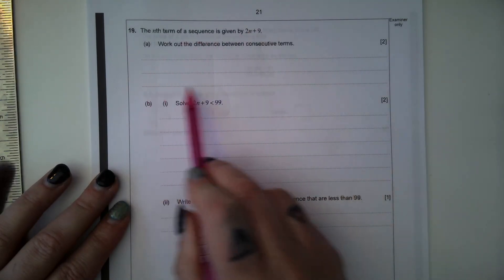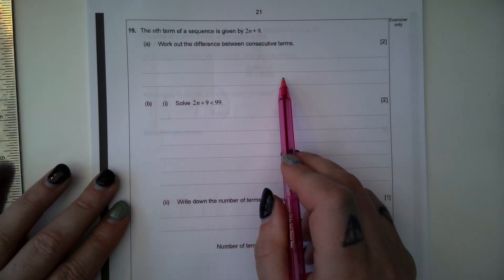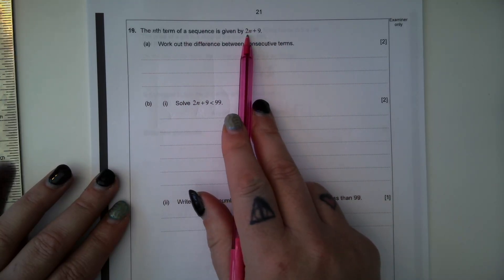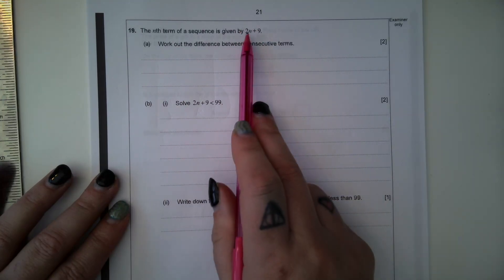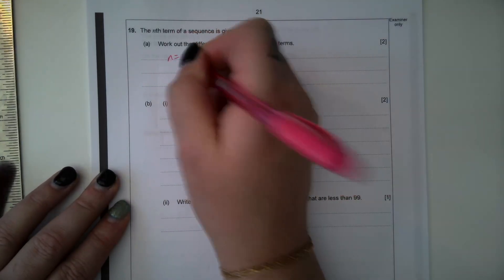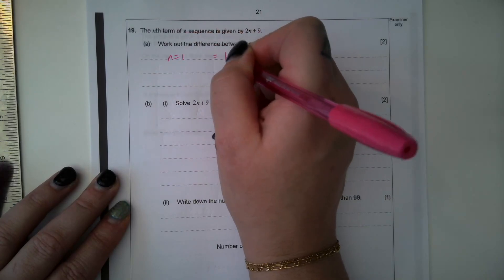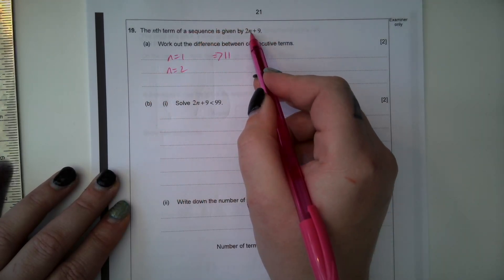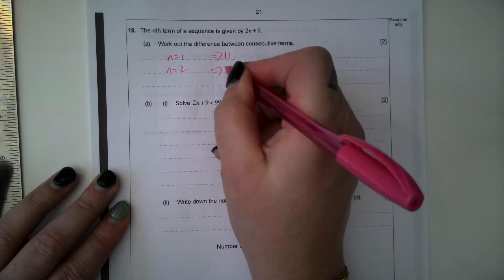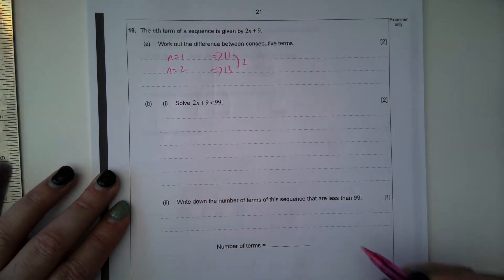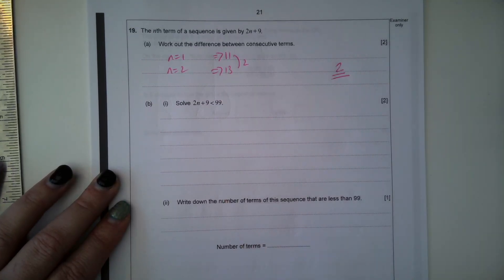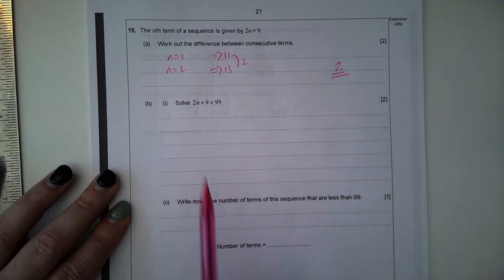Because when we're finding the nth term of a sequence, the number that goes in front of the n is the common difference. But we can check it. So when n is 1, 2 plus 9 is 11. When n is 2, 2 times 2 is 4, plus 9 is 13. So you can see that difference of 2 there. So the difference between consecutive terms is 2. But we can also spot that from the nth term rule.